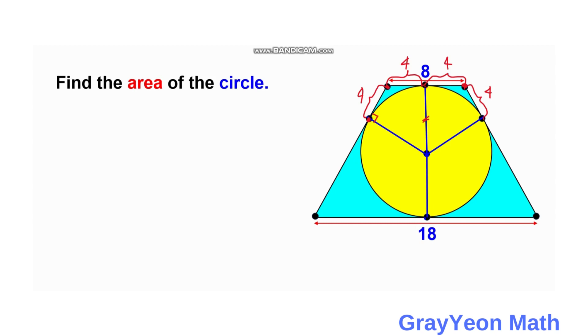Next, we consider this: let this 18 unit segment is bisected by this radius. So this radius, if that bisects, then this becomes 9. So this is actually 9 units, and this is 9 units. If that is 9, then this is also 9, and this is also 9.